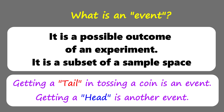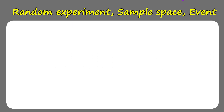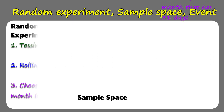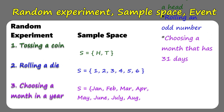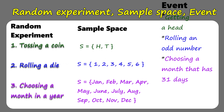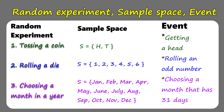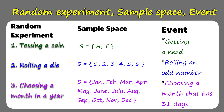What is an event? It is a possible outcome of an experiment — it is a subset of a sample space. Getting a tail in tossing a coin is an event, while getting a head is another event. This slide shows you the random experiment, sample space, and event in a table so you can recognize and differentiate them. In tossing a coin, we have a sample space of H and T, and getting a head is an event of that random experiment.